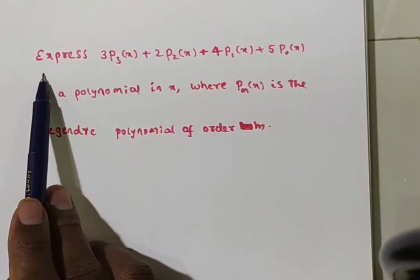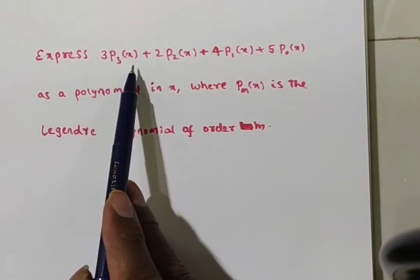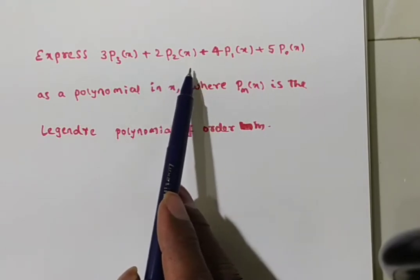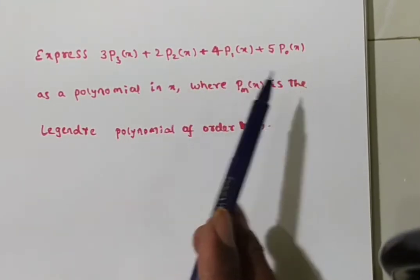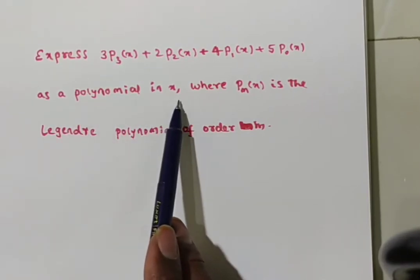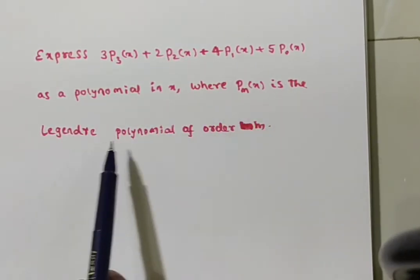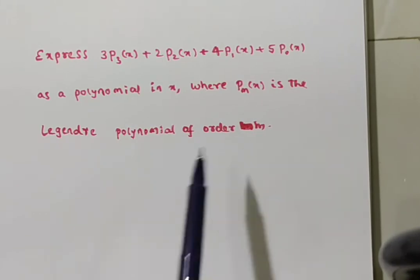Given problem is 3P₃(x) + 2P₂(x) + 4P₁(x) + 5P₀(x) as a polynomial in x, where Pₘ(x) is the Legendre polynomial of order m.